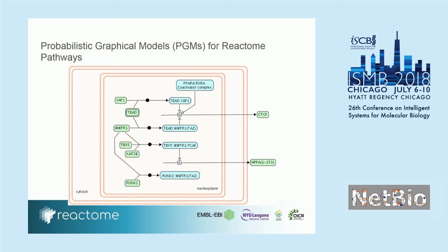As an example, we have a HIPPO gene expression regulatory pathway with CTGF and NPPA — two transcription factors that regulate cell proliferation. The expression of these two proteins is controlled by the upstream proteins YAP1, WWTR1, and RUNX2. By converting the Reactome pathway into a PGM, we can answer questions like: if YAP1 copy number is higher, is CTGF upregulated? Or, if NPPA activity is higher, is that correlated in any way with the upregulation of WWTR1?